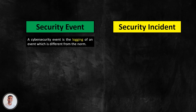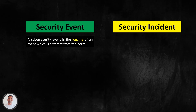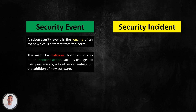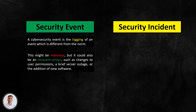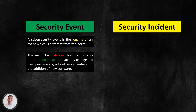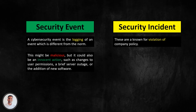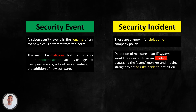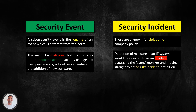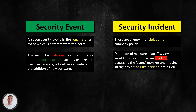A cyber security event is the logging of an event which is different from the norm. This might be malicious, but it could also be an innocent action, such as changes to user permissions, a brief server outage or the addition of new software. Cyber security incidents, on the other hand, are a known violation of company policy — for example, the detection of malware in an IT system would be referred to as an incident, bypassing the event moniker and moving straight to a security incident definition.